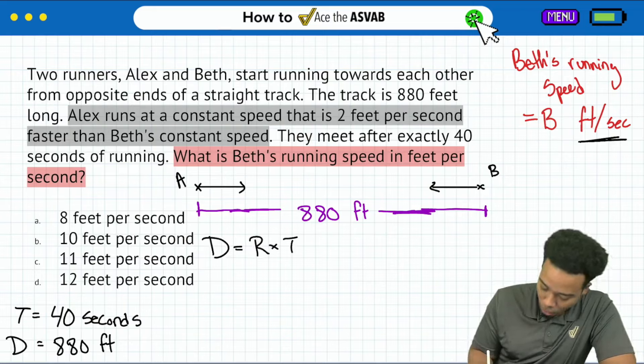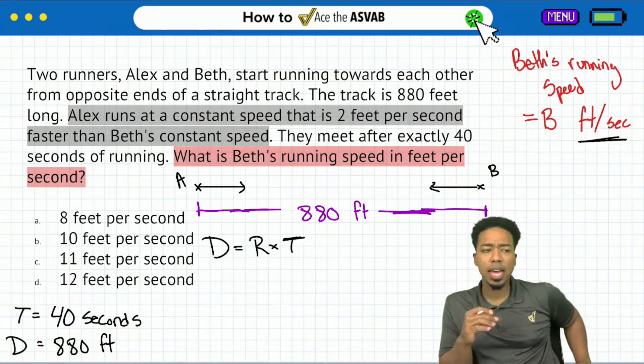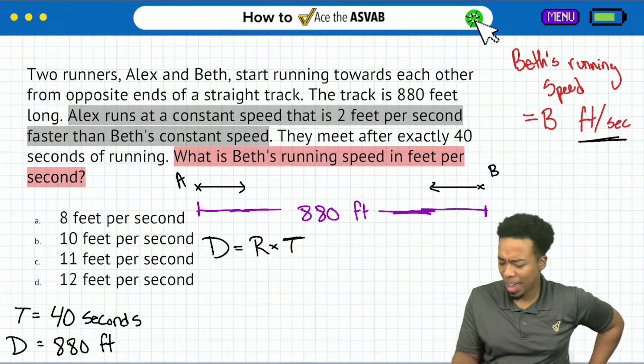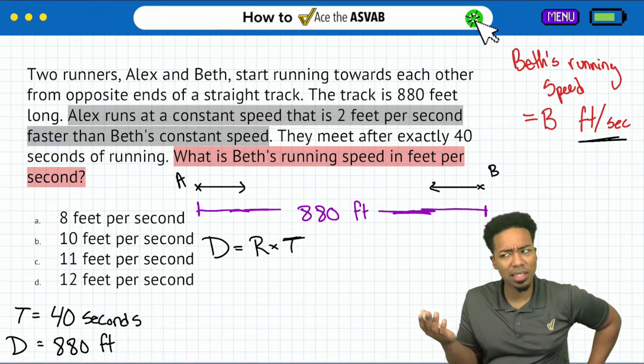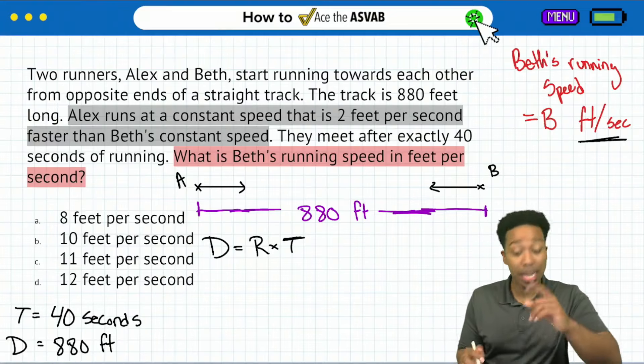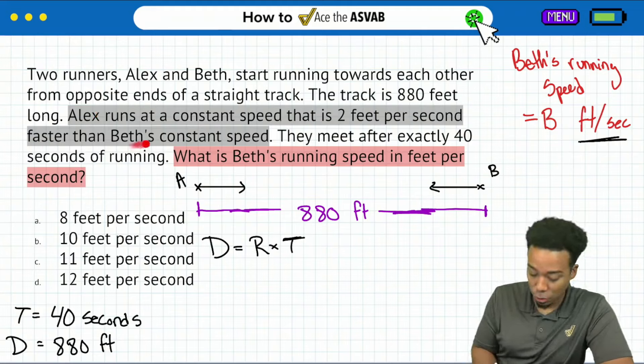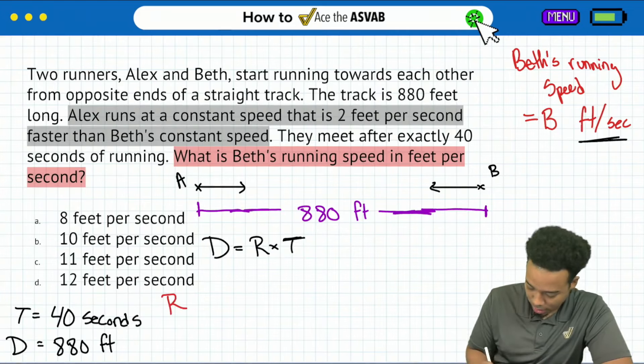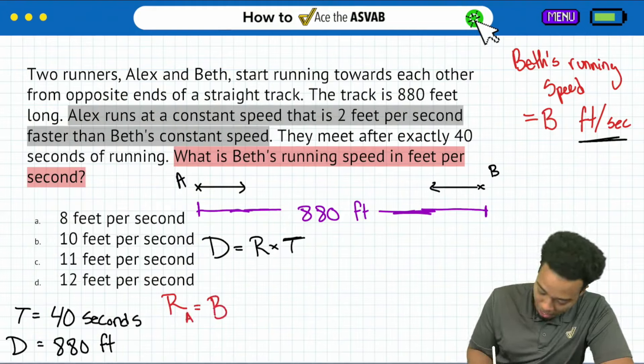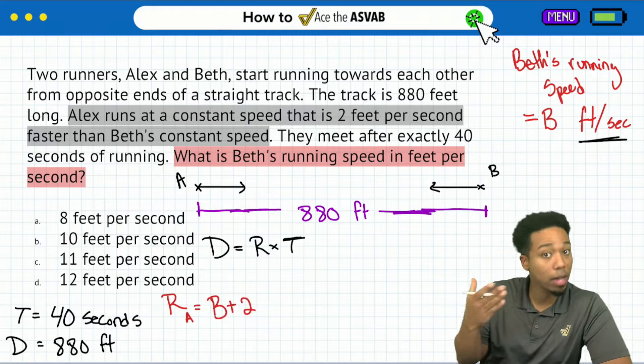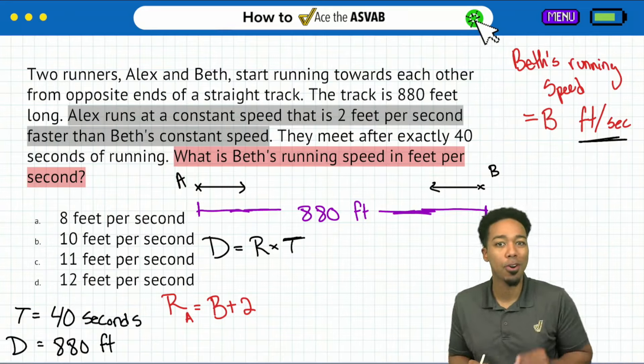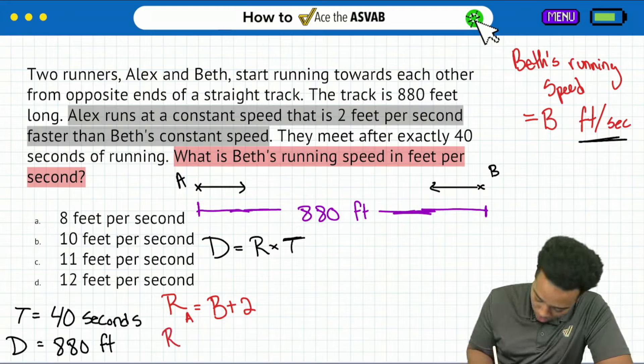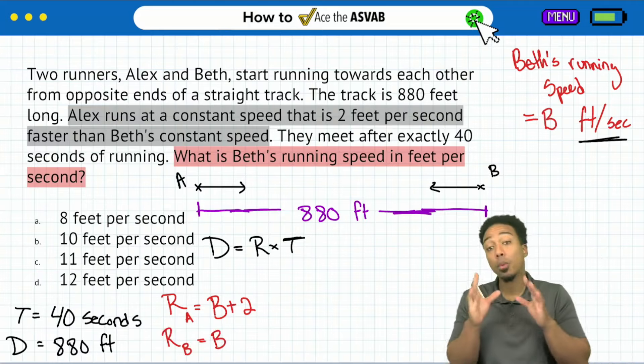That's how we'll set up our distance equals rate times time formula. I understand the distance and time, but what do I put for the rate? We need to add those rates. I have Beth's rate as B, but what about Alex? Alex runs two feet per second faster than Beth, so the rate for Alex is Beth's speed plus two. This is where things get more algebraic. Alex is represented as B plus 2, and Beth's rate is just B.